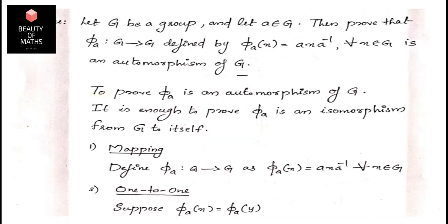Now let G be a group and let a belong to G. We must prove that φ_a: G → G defined by φ_a(x) = axa⁻¹ for every x in G is an automorphism of G. That is, we need to show φ_a is a bijective homomorphism from G to G.